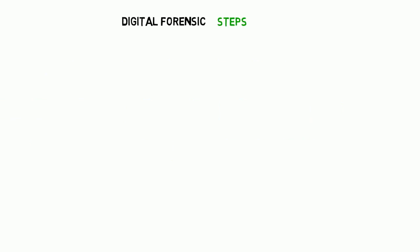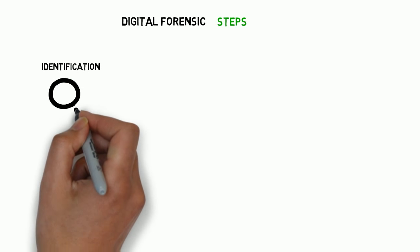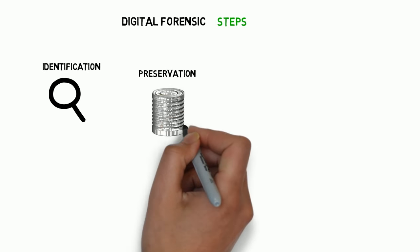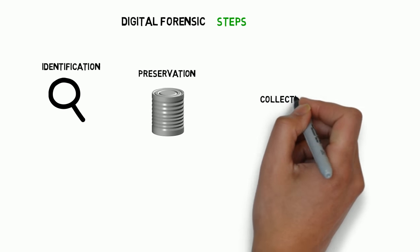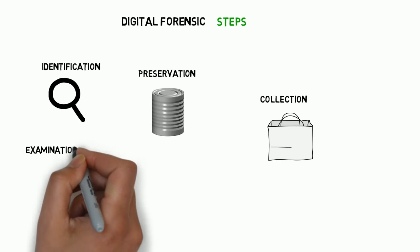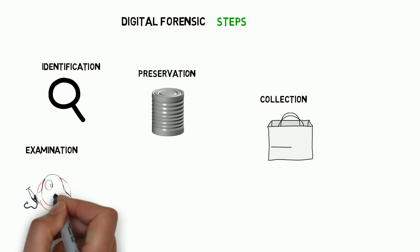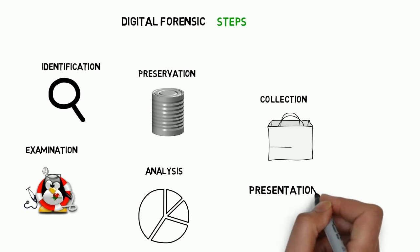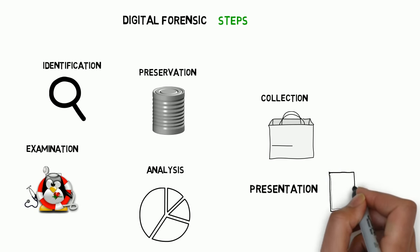The steps to handle digital evidence are as follows. Identification: identify and mark relevant things that could possibly be evidence. Preservation: store possible evidence. Collection: summarize all evidence relevant for one case. Examination: investigate and get an overview of possible evidence. Analysis: process the examination results. Presentation: represent the results from the analysis in an appropriate format.